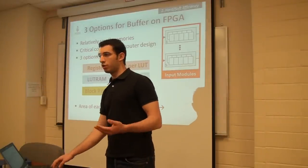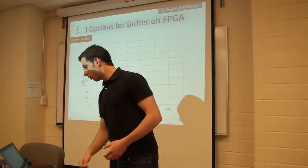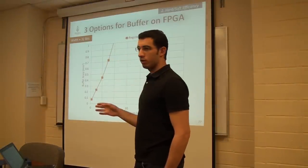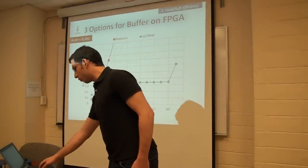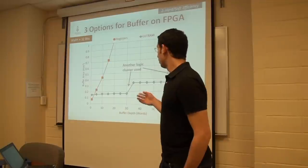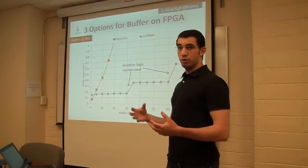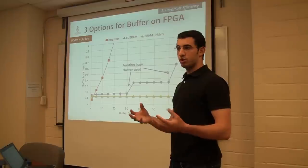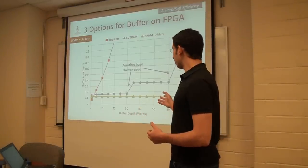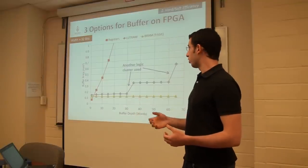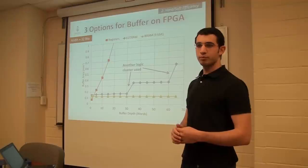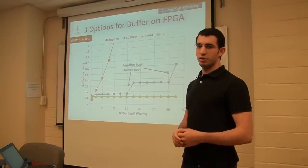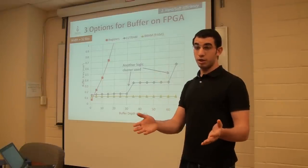We plotted area versus buffer depth for these three options. With registers, area grew quickly — clearly inefficient. With LUT RAM it was much better, with jumps when you run out of depth in a logic cluster. Surprisingly, block RAM was more area-efficient than both registers and LUT RAM. This contradicts previous work that leans toward LUT RAM for small memories. One caveat is that block RAM is less flexible in placement than LUT RAM, which is everywhere.